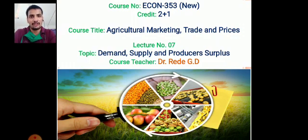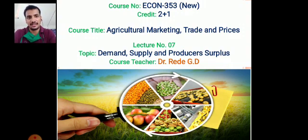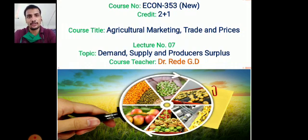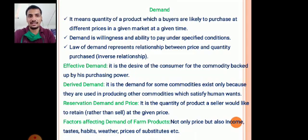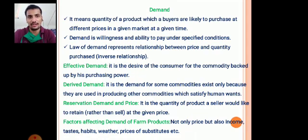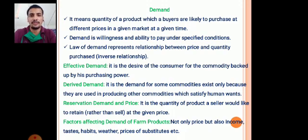As we have covered these topics in our second semester course of Principles of Agriculture Economics or Fundamentals of Agriculture Economics, we know what is meant by demand — demand is a willingness and ability to pay under a specified condition, or the quantity of a product which buyers are willing to purchase at different prices in a given market at a particular period.